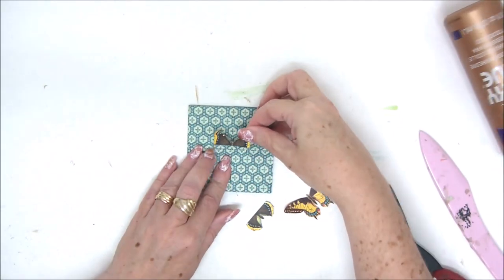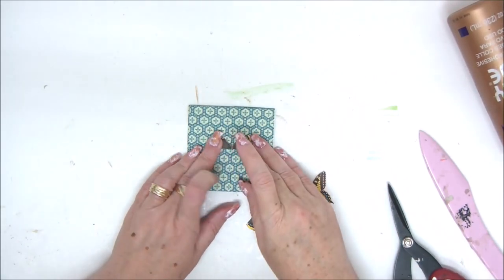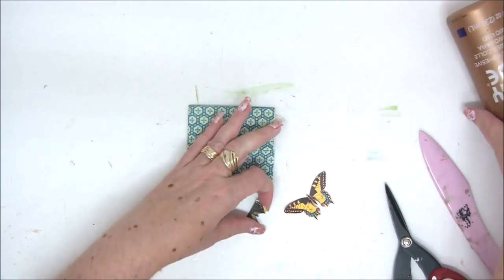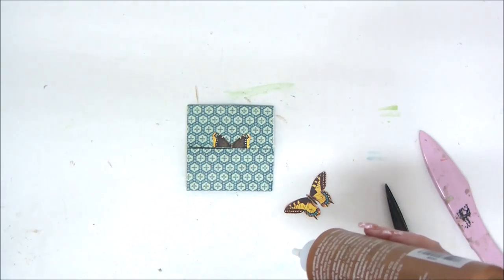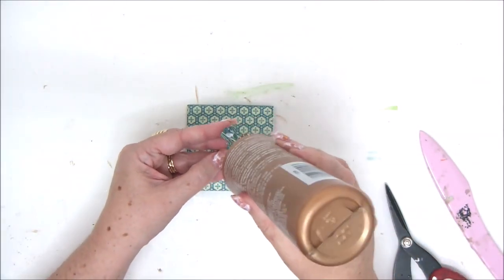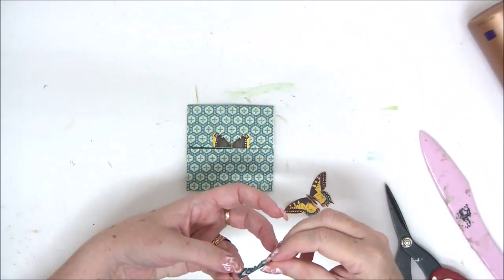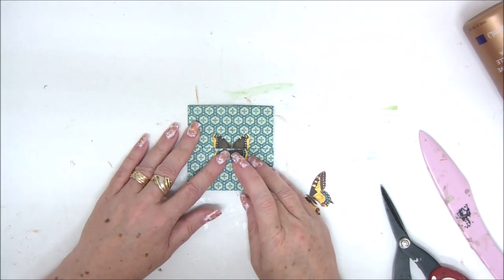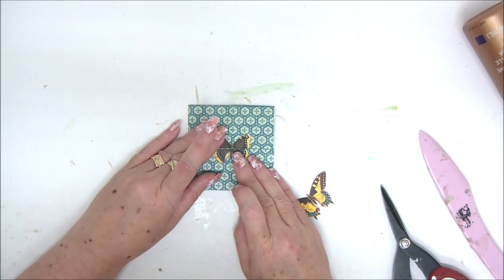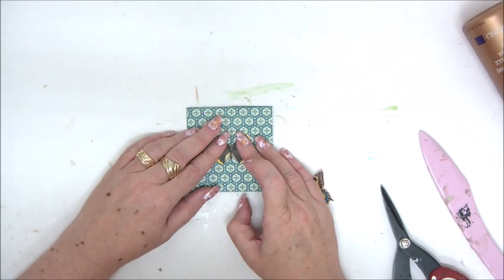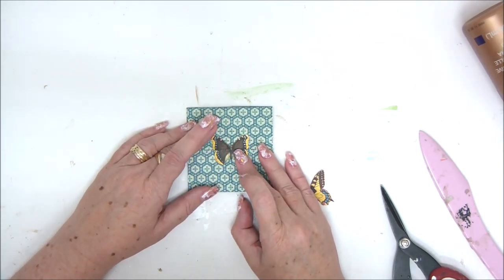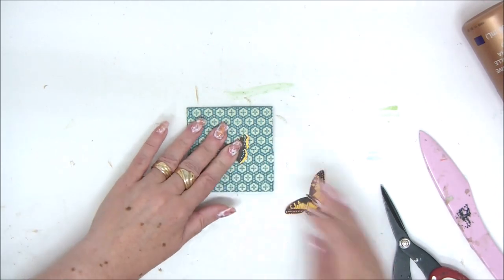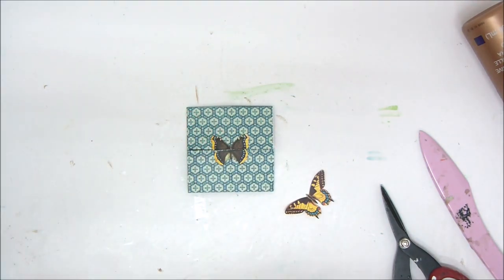And of course you can add stickers, letters, you can hand write on your card. It's a really fun and cool card and like I said any size of square paper will work. So if you want to make a bigger card simply use a larger square. If you want a smaller card, use a smaller square. It all depends on the size of the paper that you're using.